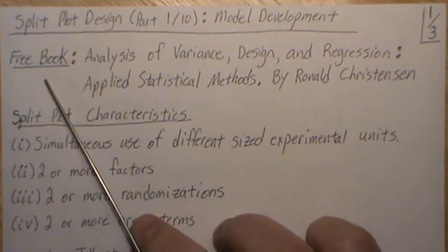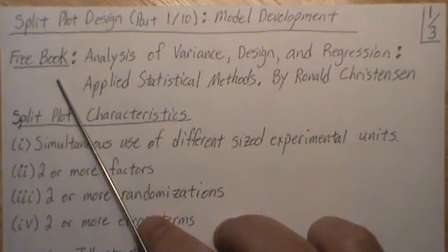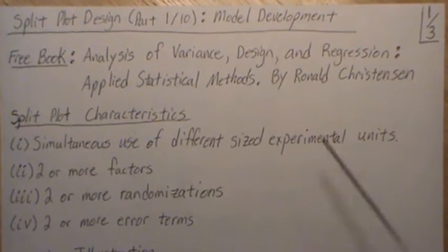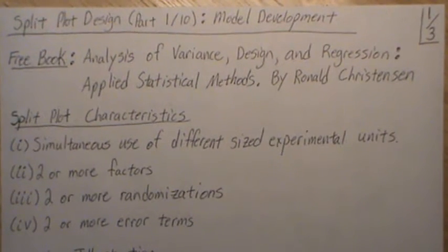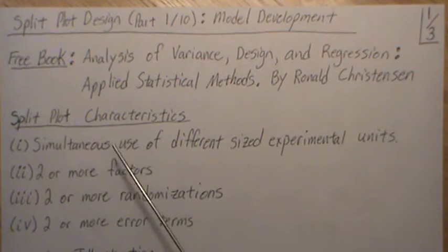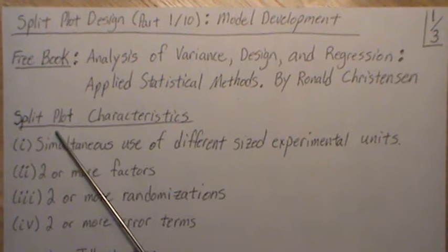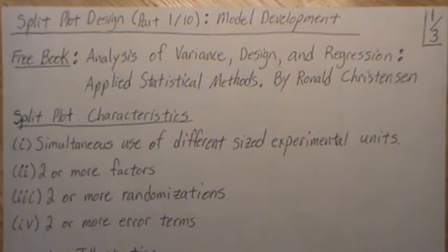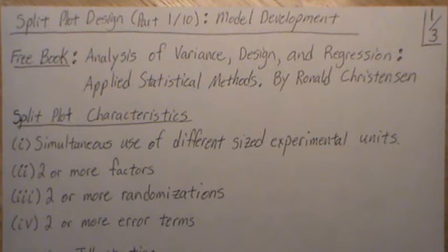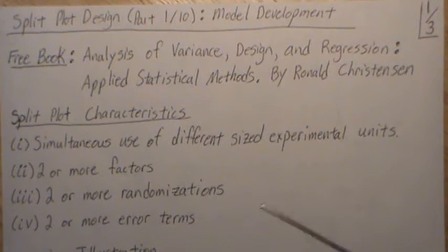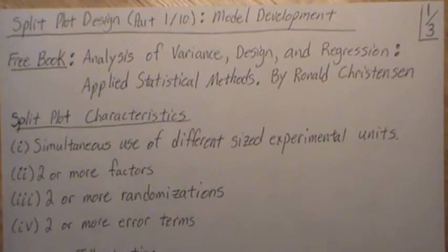I just found a free book by Ronald Christensen — it's Analysis of Variance, Design and Regression, Applied Statistical Methods. I actually like this; I think they do the description of this split plot design justice, so I'd recommend reading that. I'm sure there are other good books too.